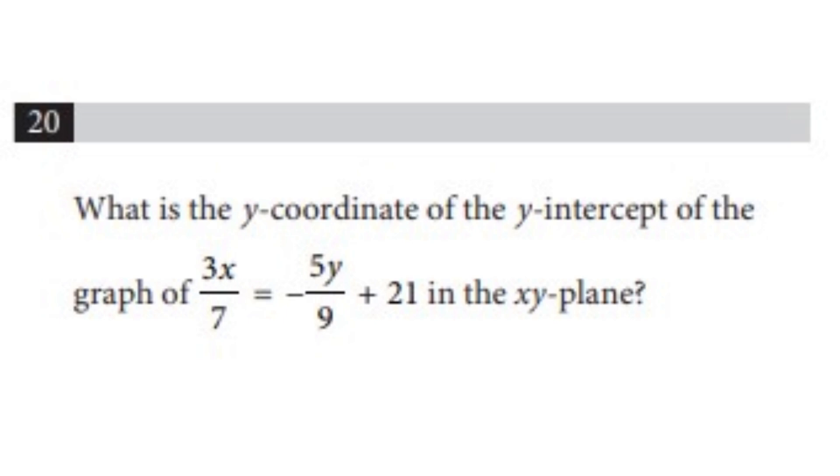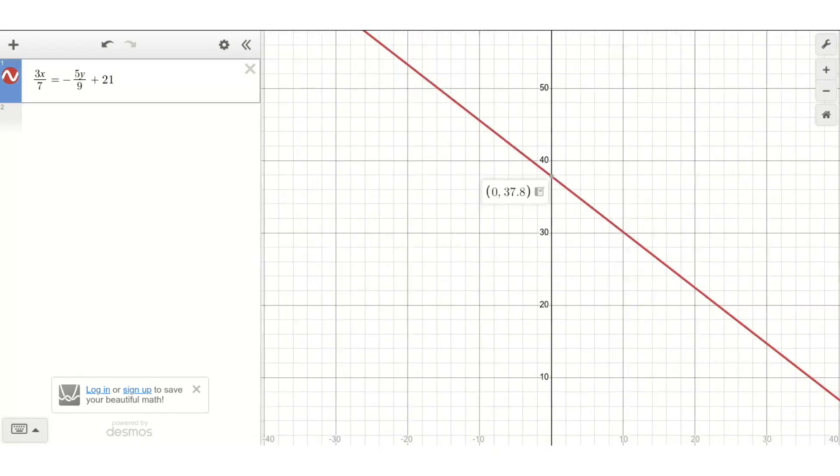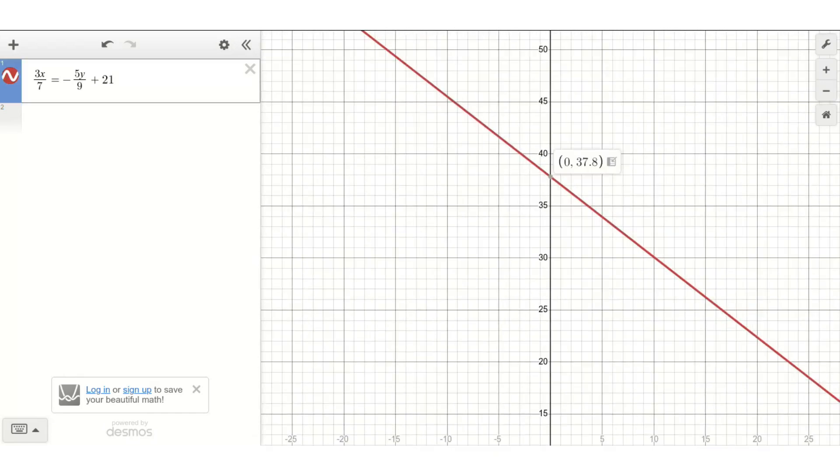Another common question is one where they give you an equation and then they ask for the y-coordinate of the y-intercept. For example, the question states that the equation is 3x over 7 equals negative 5y over 9 plus 21. We put this into Desmos and we can see that the y-coordinate of the y-axis is 36.8 and that's the answer to the question.